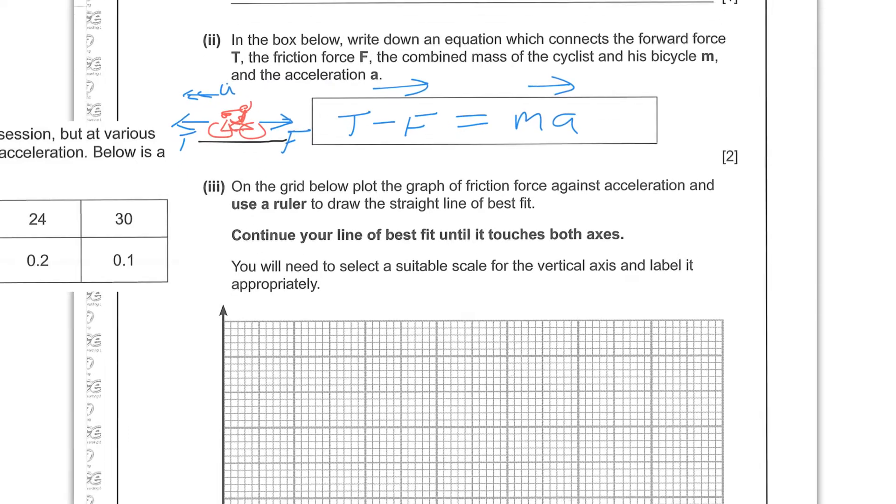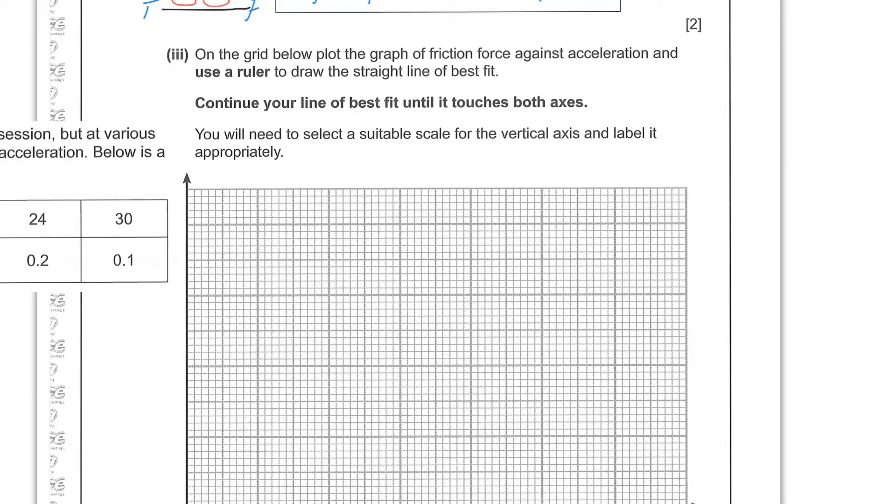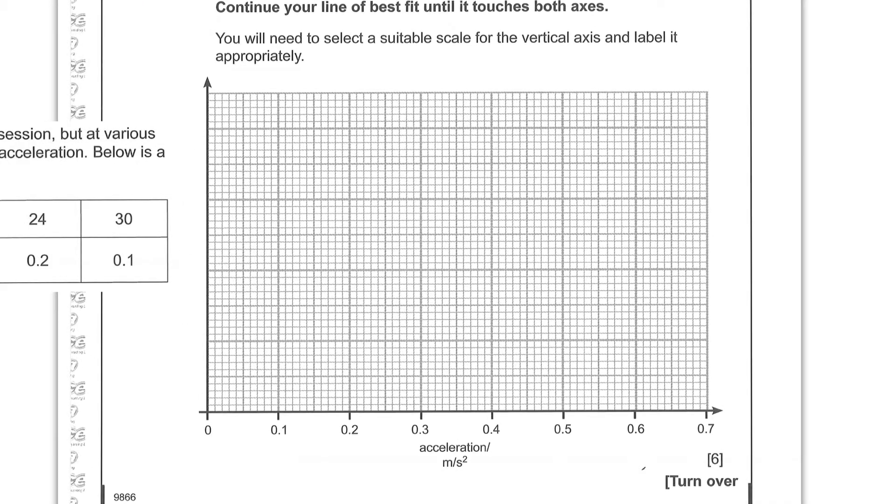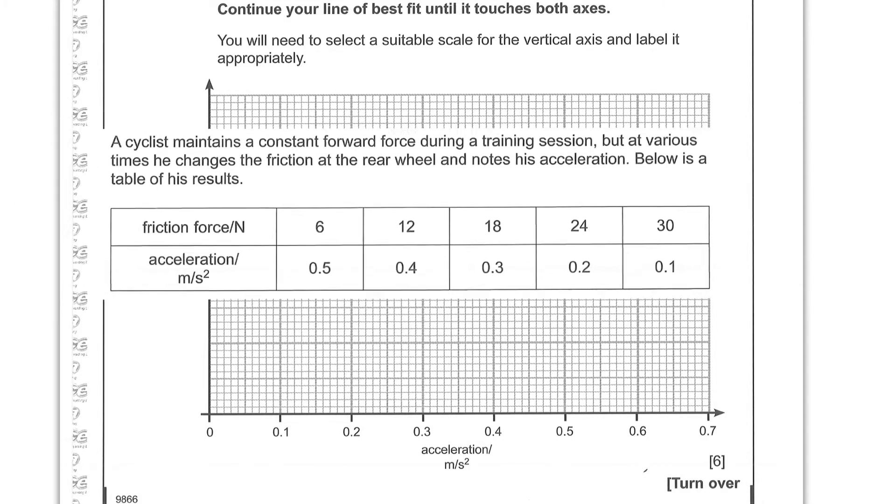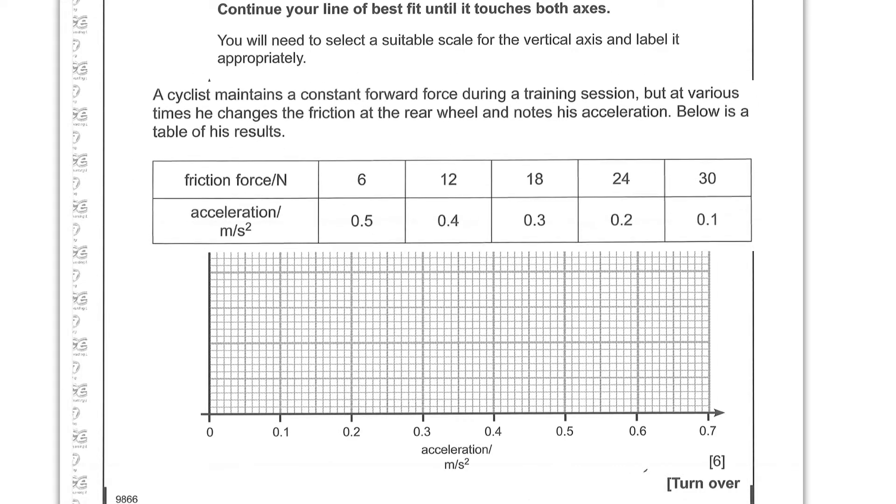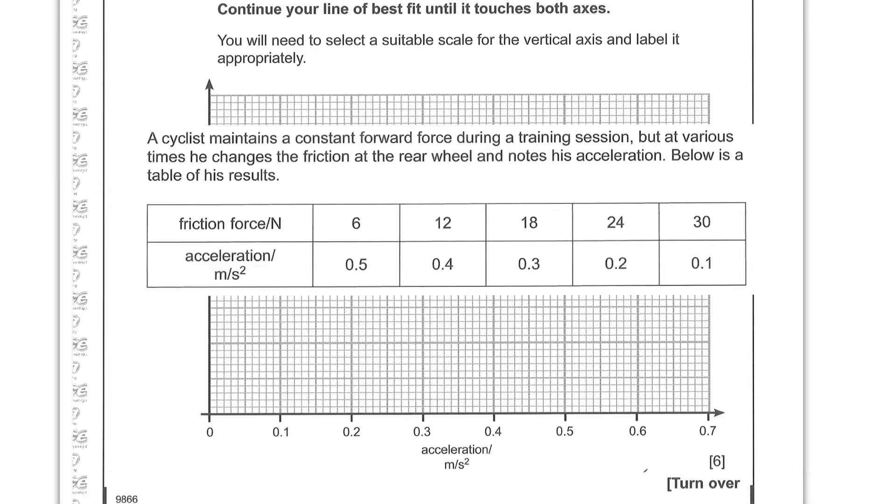Part 3 then. On the grid below, plot a graph of the friction force against the acceleration and use a ruler to draw the straight line of best fit. So they're telling you that it's going to be a straight line. Continue your line of best fit until it touches both axes. You will need to select a suitable scale for the vertical axis and label it appropriately. So what they've done is they've given us the acceleration scale and have asked us to make up the other scale. So again we need to look at these numbers, which makes me glad now that I kept them.